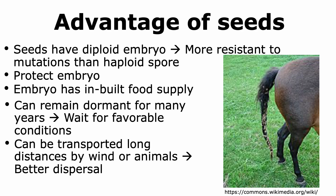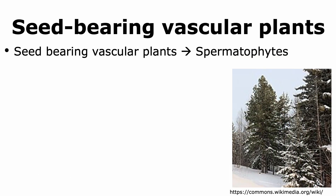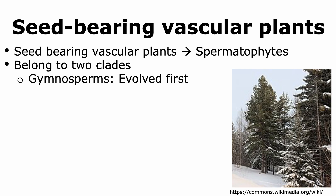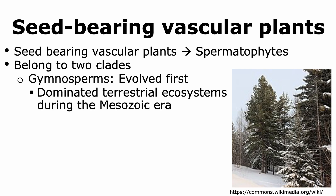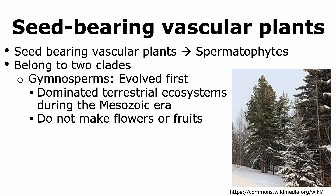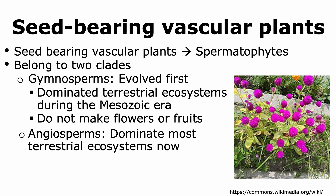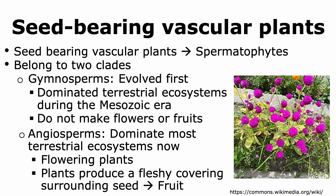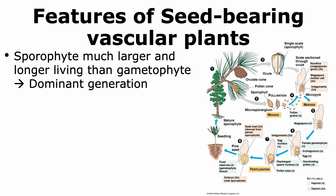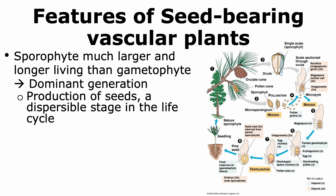Seed-bearing vascular plants are also called spermatophytes. All spermatophytes belong to two clades. The first clade is the gymnosperms, which evolved first and dominated terrestrial ecosystems during the Mesozoic era. One feature of gymnosperms is that they do not make any fruits or flowers, but they do make seeds. The second clade are the angiosperms, which dominate most terrestrial ecosystems today. They are flowering plants and produce a fleshy covering surrounding the seed, which we call fruit. In all seed-bearing vascular plants, the sporophyte is the dominant generation, and all produce seeds representing a dispersible stage in their life cycle.